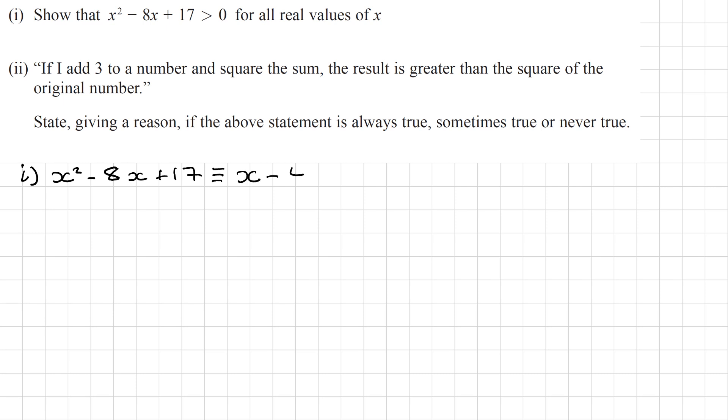So x minus 4. We always want to have half of the coefficient of x here. Now if I expand these brackets, I'll get x squared minus 4x minus 4x and minus 8x. And then minus 4 times minus 4 is plus 16. So comparing this to what I have here, I can see I actually want plus 17. So I need to add 1 to this to make it balance and make it equivalent.